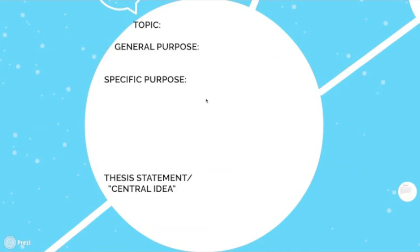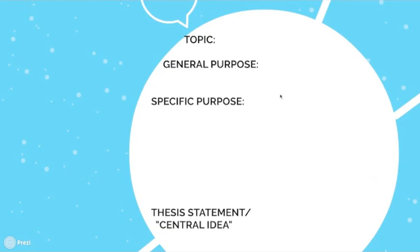Now I want to clarify some of the jargon your textbook uses when describing thesis statements — you'll be taking a quiz on this chapter and I want you to do well. The textbook walks through: topic, general purpose, specific purpose, and then thesis statement — which they call a 'central idea.' I have to say I've never heard anyone call it a central idea; it's almost always just called a thesis statement. That's one place where they confuse you, but we'll get to it.